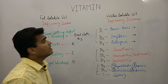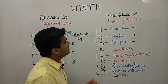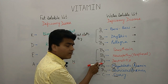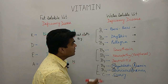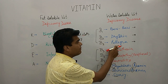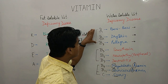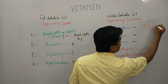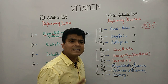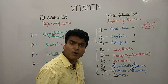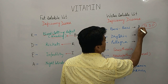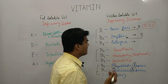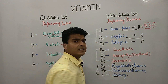Moving on to water-soluble vitamins: we have B1, B2, B3, B5, B6, B7, B9, B12, and Vitamin C. B1 causes beriberi, B2 causes dry skin and also glossitis, and B3 causes pellagra. To remember these three, use the mnemonic BDP — like a BD cigarette used in rural areas for smoking. B for beriberi, D for dry skin, and P for pellagra.